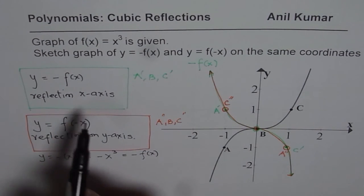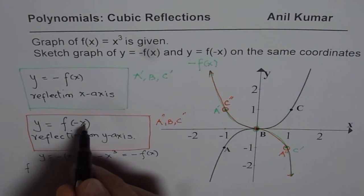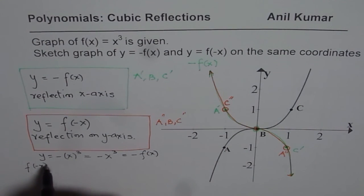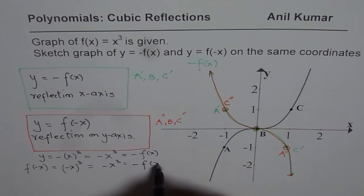Now, if I do f(-x), let us do that part now. We will start from the reverse side. f(-x). That really means replace x with -x. So we have (-x)³, right? And that is equals to, again, -x³. So this is also same as -f(x).